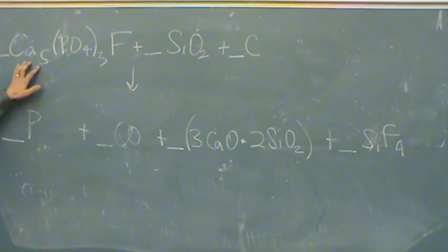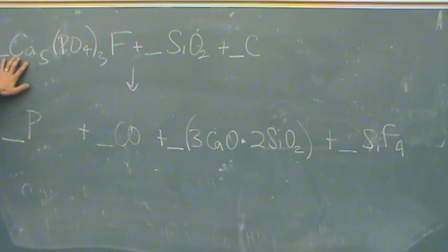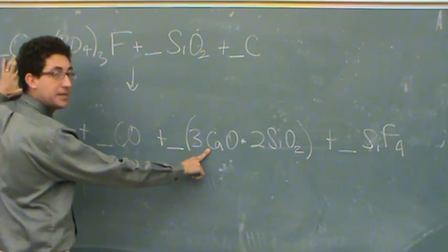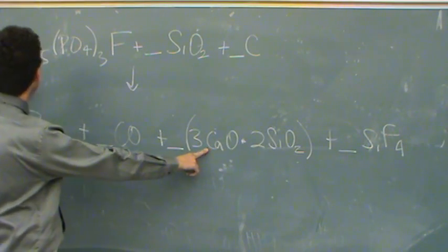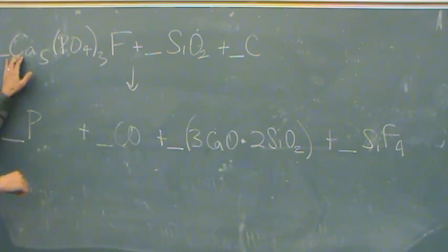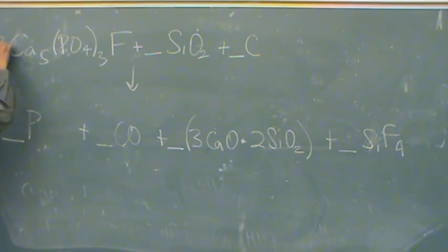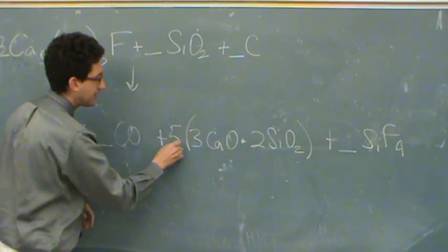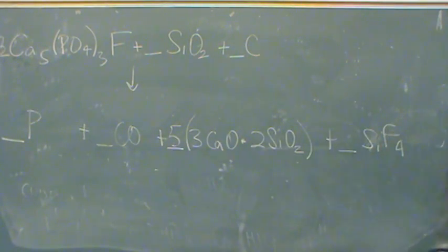We're going to start at the ugliest looking thing, that's this one. So there's five calciums here, and I have three here. The least common multiple is fifteen, so you're going to put a three here and a five here — that'll give me fifteen calciums on each side.